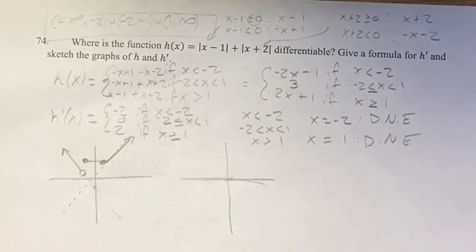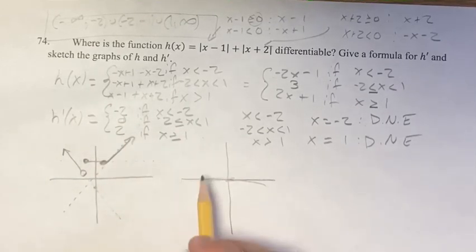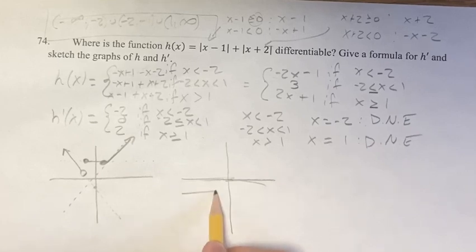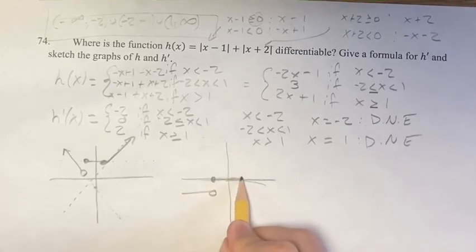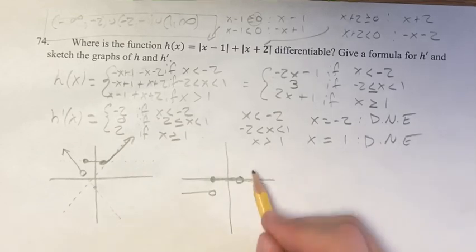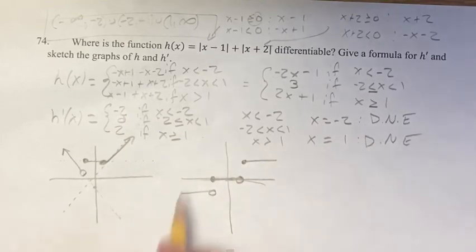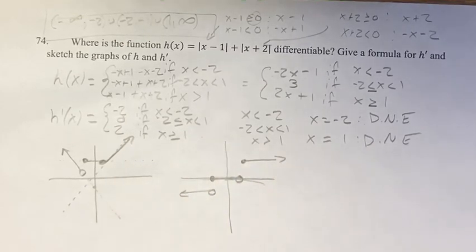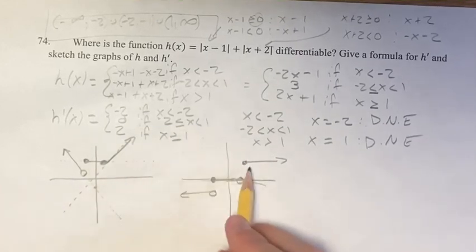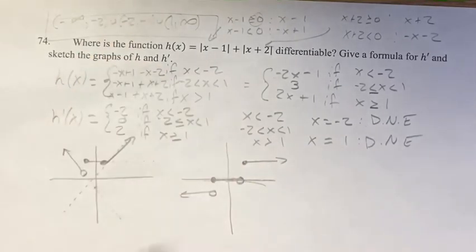For the graph of the derivative: it's going to be negative 2 up to x equals negative 2, then 0 from negative 2 to 1, then 2 for x greater than or equal to 1 — with open and closed circles lining up with the equal signs in the domains. That's your range and those are your graphs. Thank you for liking and subscribing, and I'll see you in the next video.